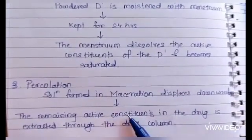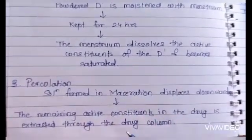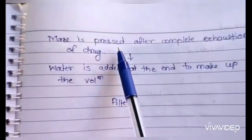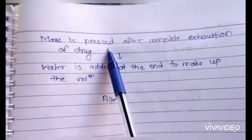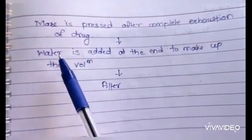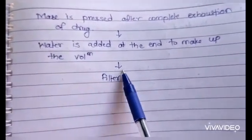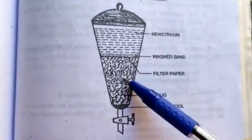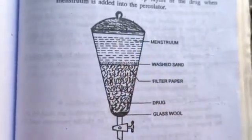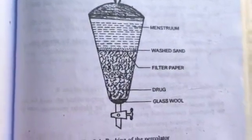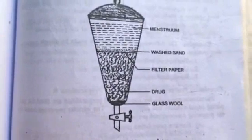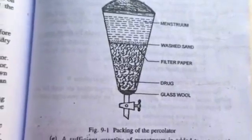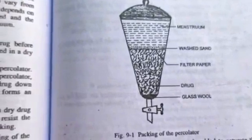After complete exhaustion of the drug, the marc obtained is pressed and the liquid is collected from the marc. It is then added to the percolate. At the end, the volume is made up by adding water, and then it is filtered. Before packing the drug, it should be powdered so that it may be uniformly packed in the container. The drug needs to be moistened so that it will not cause blockage of the percolator. Before packing, the drug is passed through a sieve to break any lumps or masses.